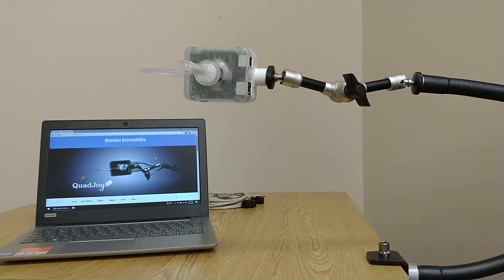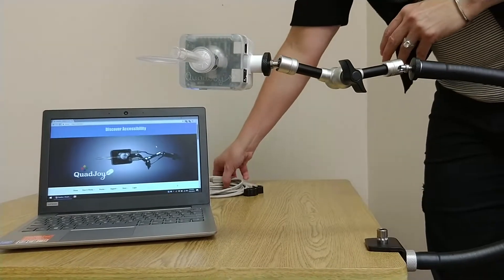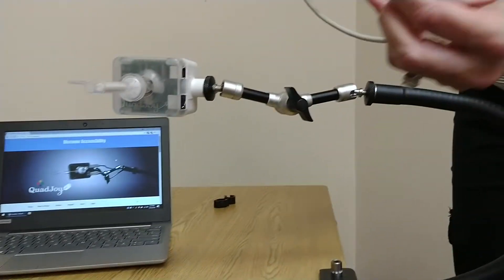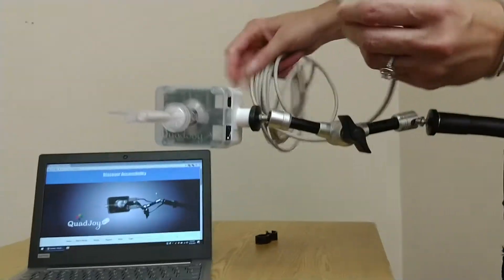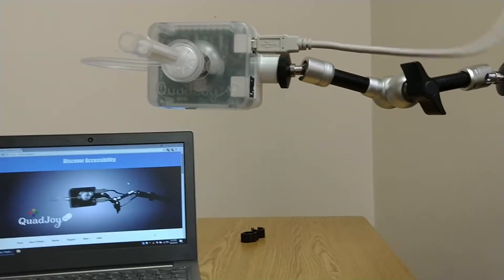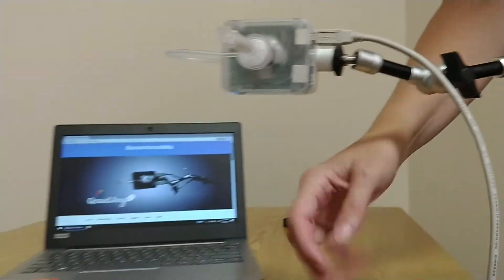Now connect the USB cable to the Quad Joy, the square end of it. Plug the other end into the computer, the rectangular end.